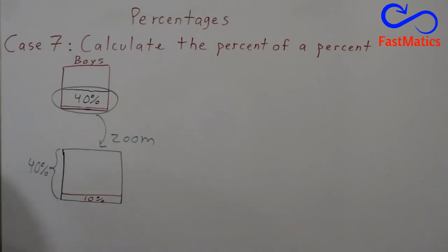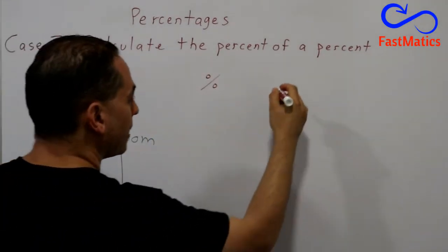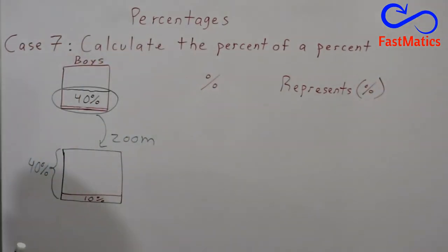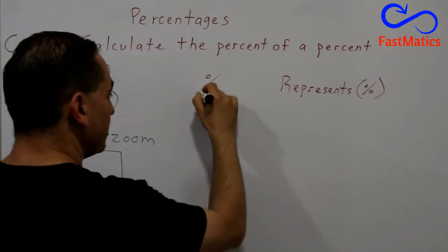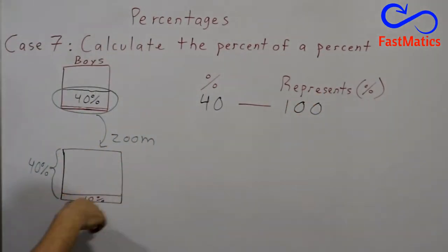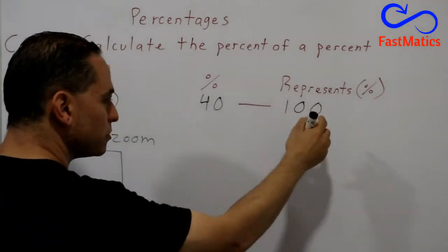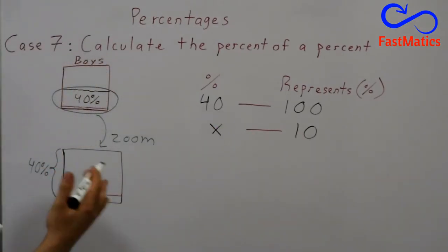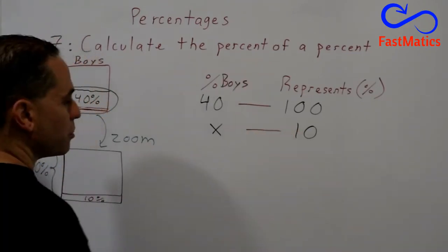So remember that all percent problems can be solved using rule of three. In this case is not an exception. We're gonna write percent here and represents percent in percentage here. So the 40% here represents the 100% of this square. Now if we take not 100 but only 10% of this square, what percentage of the original amount is gonna be? What percentage of boys is gonna be?